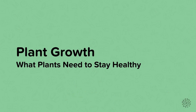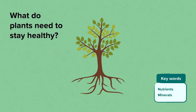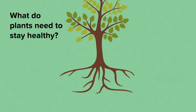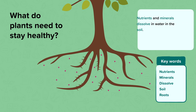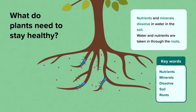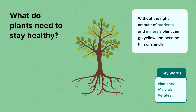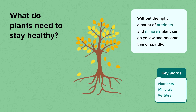What do plants need to stay healthy? To stay healthy, plants also need small amounts of nutrients and minerals. Nutrients and minerals are small substances that dissolve in water in the soil. Water and nutrients are then taken in through the roots of the plant. Without the right amount of nutrients and minerals, plants will no longer grow strong and healthy.